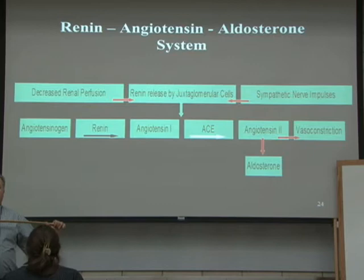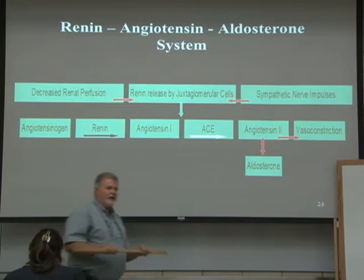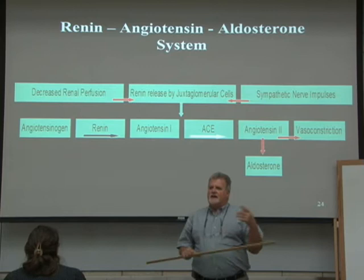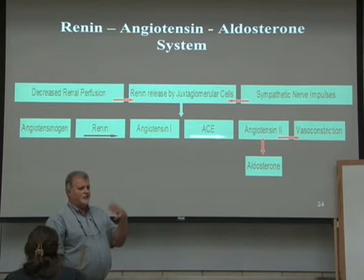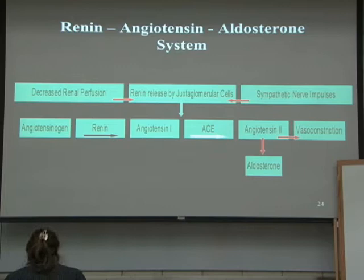If we get a decrease in blood flow to the kidney, then glomerular blood hydrostatic pressure would go down, GFR would go down, and the amount of filtrate being produced goes down. What happens is you get a drop in filtrate production, and that's what the macula densa responds to. The macula densa communicates with the juxtaglomerular cells, and then they release renin.